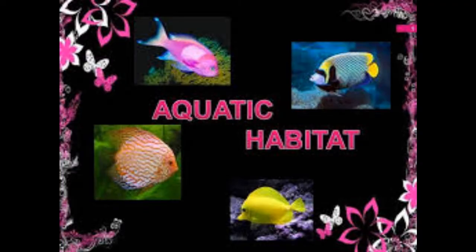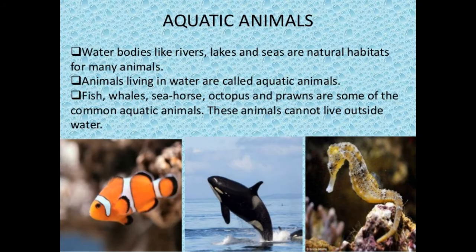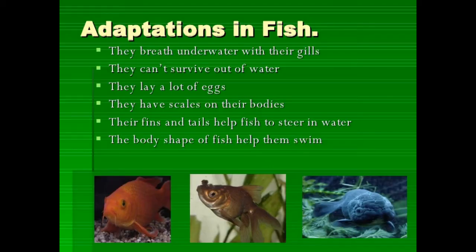First we will see adaptations in aquatic animals. Aquatic animals like fish have many adaptations which help them to survive in water. They are adapted in such a way that they can easily swim in water, catch their food, breathe, and reproduce. One adaptation is that the body is streamlined, which makes the fish resistant to water and helps in swimming.